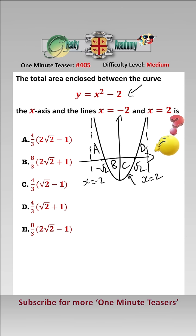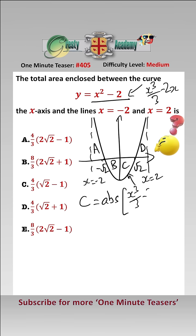Now C and D we have to take the absolute value because they're below the x-axis. B equals C by symmetry and A equals D by symmetry. Integrating this we get that it equals x cubed over 3 minus 2x. Therefore the area of C is the absolute value of x cubed over 3 minus 2x between root 2 and 0, and that equals 4 root 2 over 3.